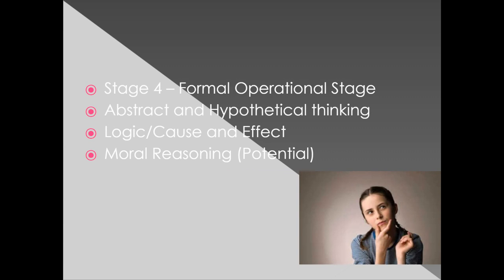Finally, stage four is the formal operational stage — about age ten through adolescence. During this time, we begin to see abstract and hypothetical thinking. Children can think about ideas outside their immediate environment and consider 'what if' questions. They develop complex logic and cause-and-effect relationships, seeing connections not just in their own world but in the world entire. They also develop the potential for moral reasoning. Some children won't develop higher-level morals until later in adolescence, while others can develop it during stage four.